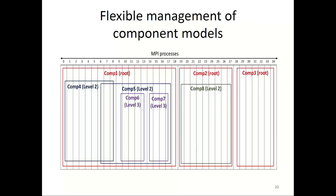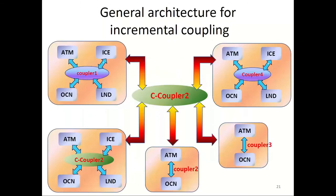Next I will introduce the functionality for incremental coupling. In C-Couplers 2, there is flexible management of component models in hierarchical levels. For example, component 1 is the parent of components 4 and 5, and component 5 is the parent of components 6 and 7. Components 4 and 5 can share a part of processes. These hierarchical levels of component model management enable C-Couplers 2 to be compatible with other couplers in the world, and an existing coupled model can be referenced as a component model in C-Couplers 2 for incremental coupling.